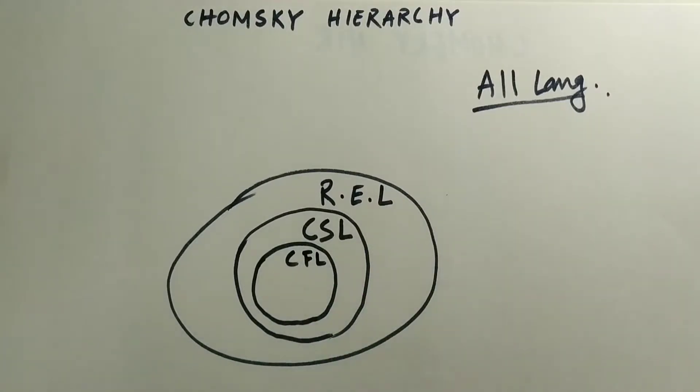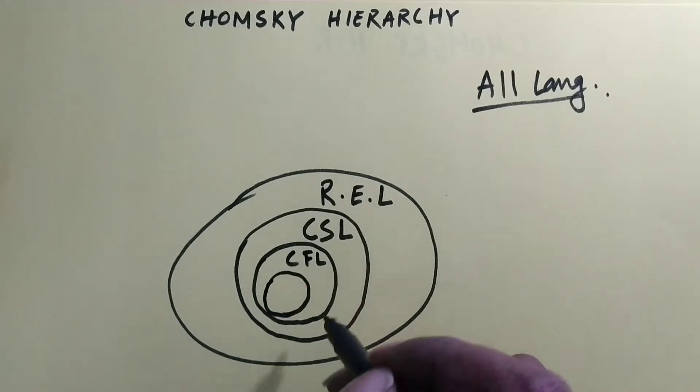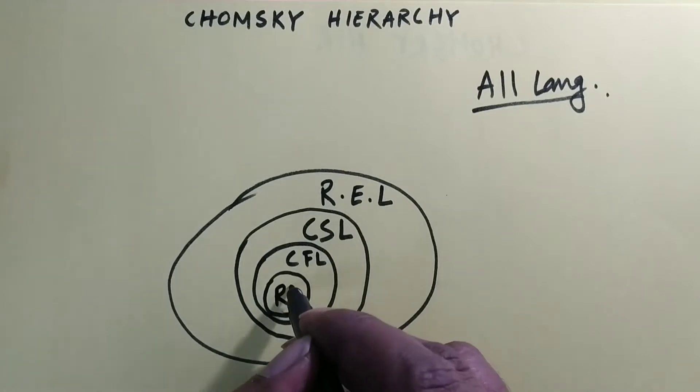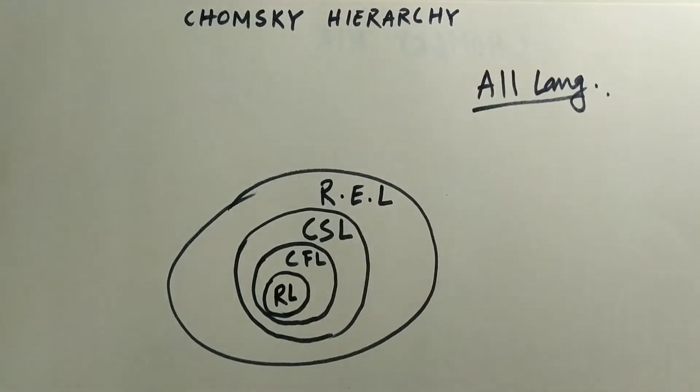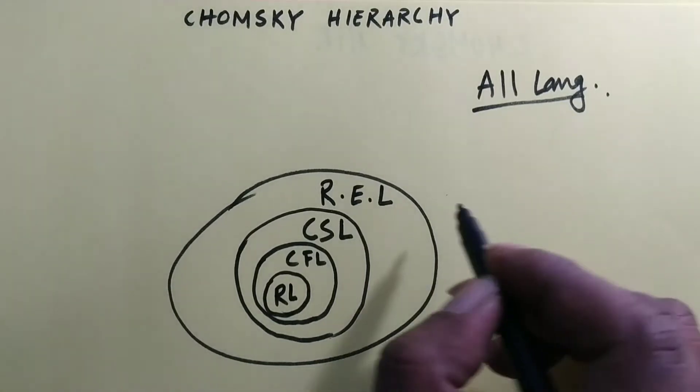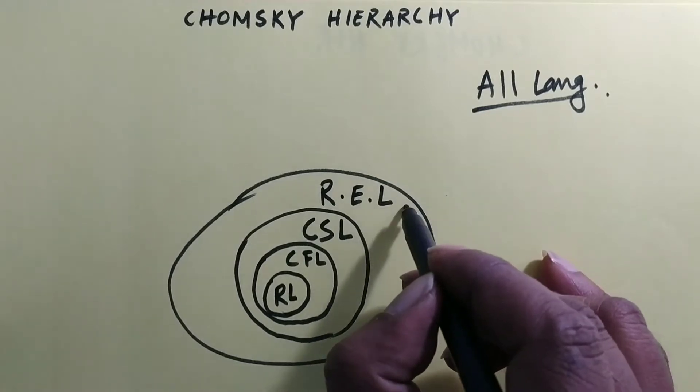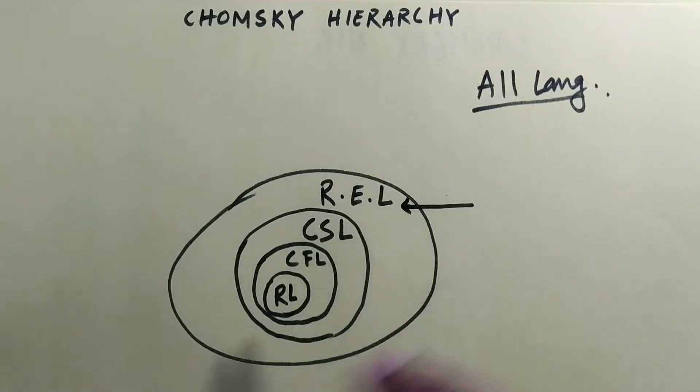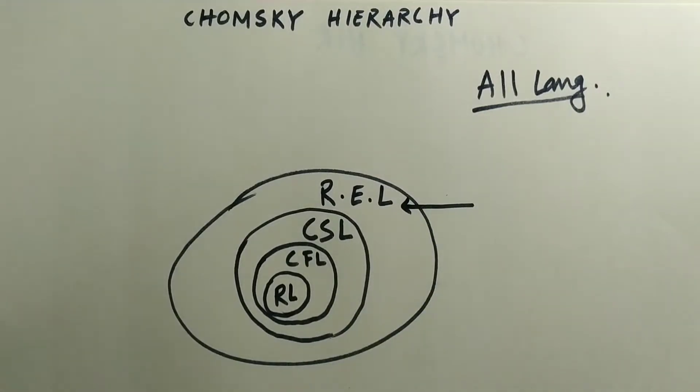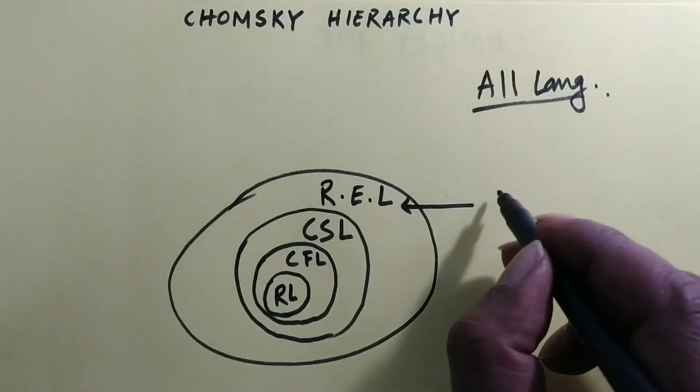And again, a subset of this context-free languages are regular languages. Now as per Chomsky, given this recursively enumerable languages was called as type 0 language.